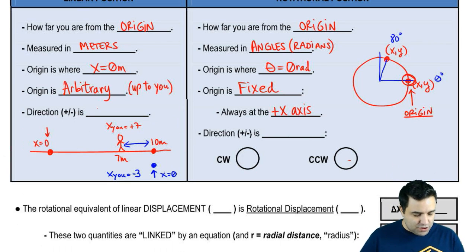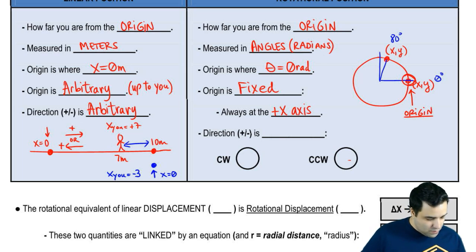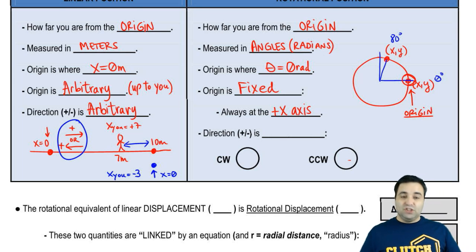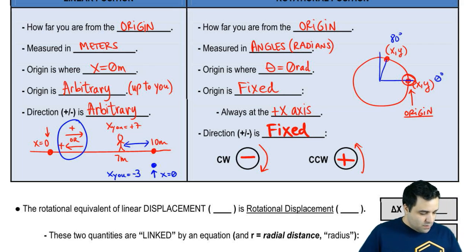The last thing is direction is also arbitrary. Direction is also arbitrary, up to you. You could say that this is positive or you could say that this is the direction of positive. Either or works. And then you adjust accordingly. If you're in rotation, direction is fixed. So clockwise, which follows a clock, goes this way, is negative. And counterclockwise, which goes this way, is positive. Direction here is also fixed. It's not up to you.